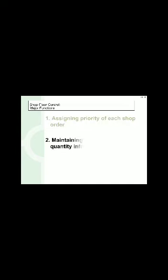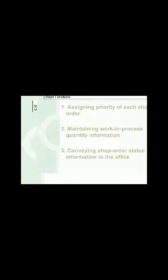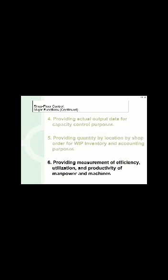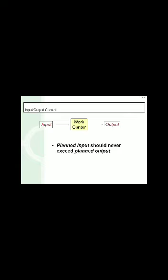Shop floor control functions include: assigning priority to each shop order; maintaining work-in-process quantity information; conveying shop order status information to the office; providing actual output data for capacity control purposes; providing quantity by location and by shop order for work-in-process inventory and accounting; and providing measurement of efficiency, utilization, and productivity of manpower and machines. For input/output control — which follows the fundamental model of operations — planned input should never exceed planned output, and attention should be focused on bottleneck work centers.